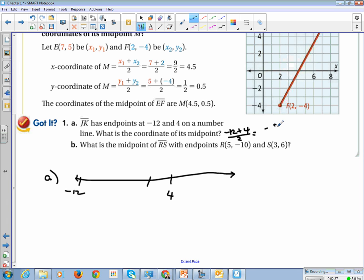And all we have to do is add them together and divide by 2. So that is negative 8 divided by 2, and it's at negative 4.